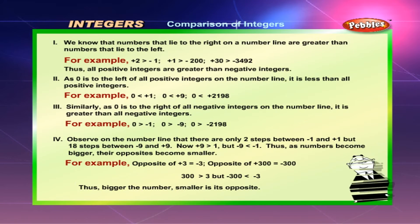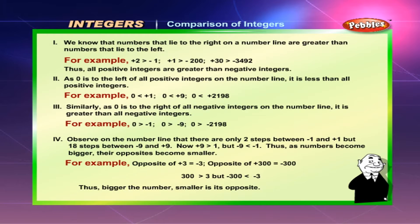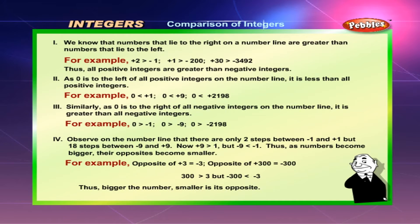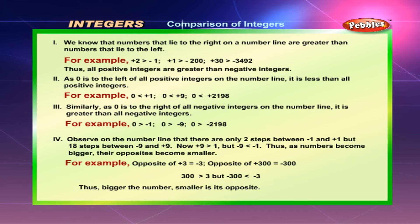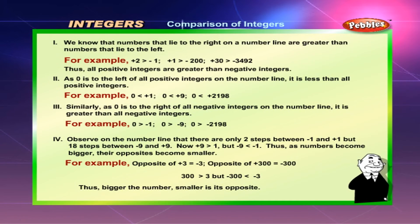Comparison of integers. We know that numbers that lie to the right on a number line are greater than the numbers that lie to the left. For example, plus 2 is greater than minus 1, plus 1 is greater than minus 200, and plus 30 is greater than minus 3492. Thus, all positive integers are greater than negative integers. As 0 is to the left of all positive integers on the number line, it is less than all positive integers — for example, 0 is less than plus 1, plus 9, and plus 2198.